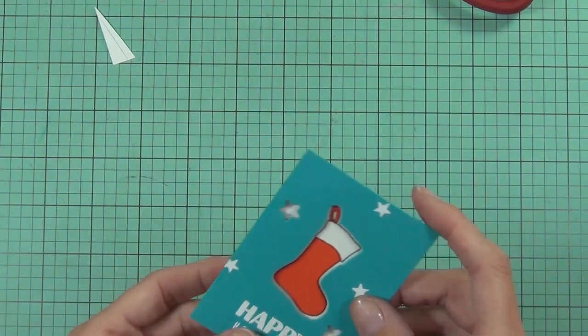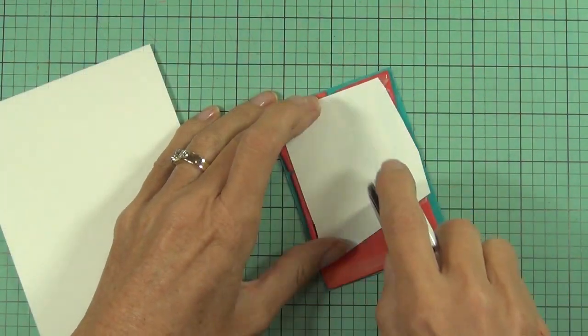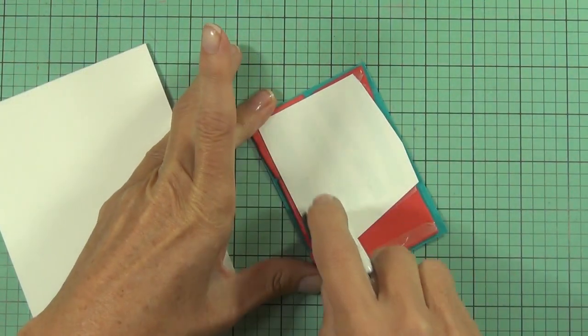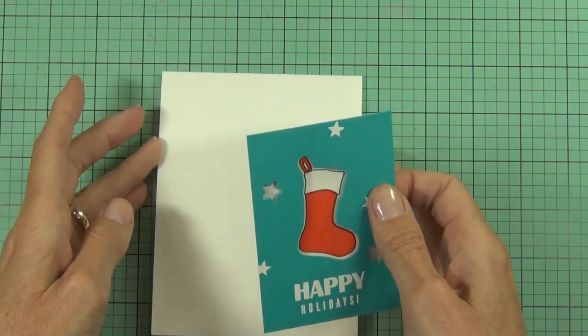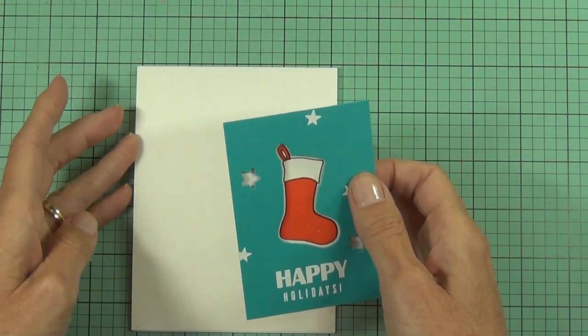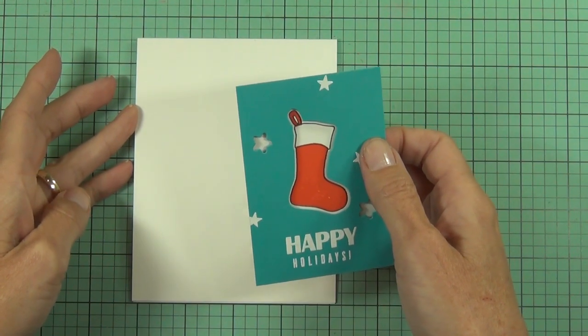You do need to be careful to make sure that my stars that I have added the negative space to, that the bits of cardstock behind don't show. All right so I've just added some tape runner to the back of that.